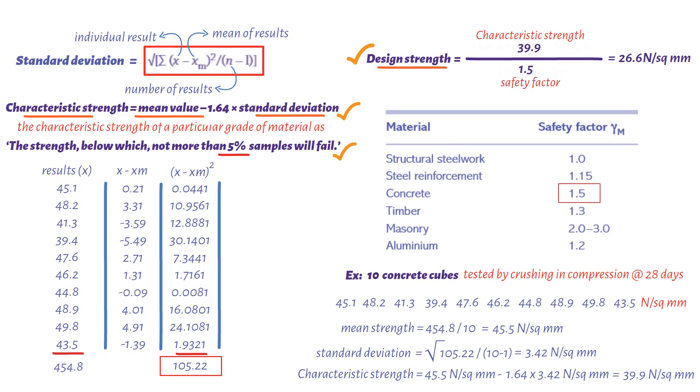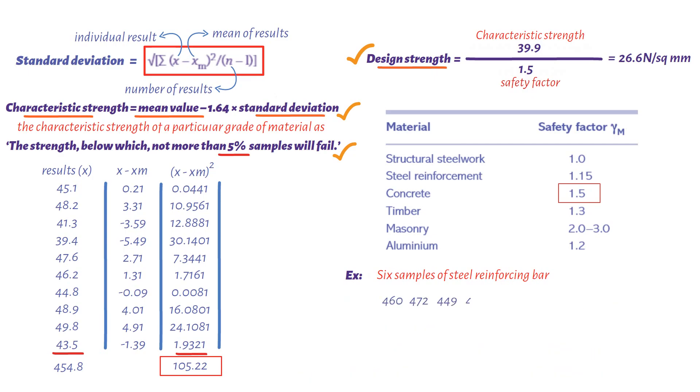To finish this off, you need to work out the following example and write your answer in the comment below. Let's say we have 6 samples of steel reinforcing bar were tested and gave the following yield stresses in newton square millimeters. You need to determine the design strength to be used in reinforced concrete calculations.